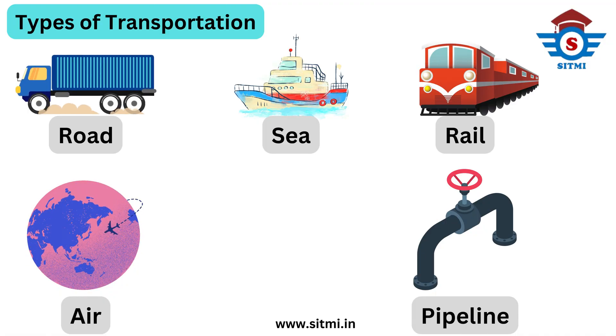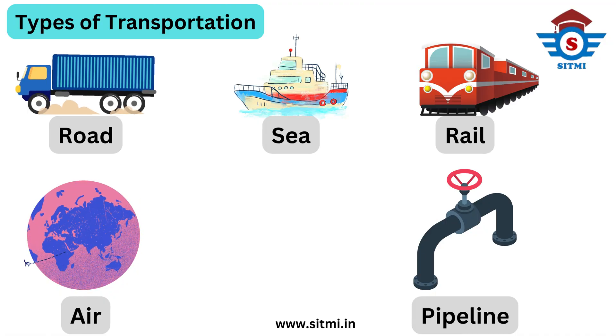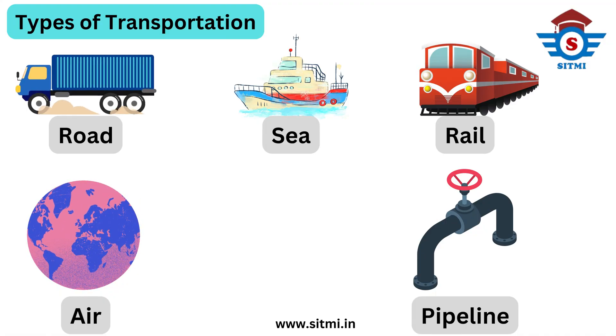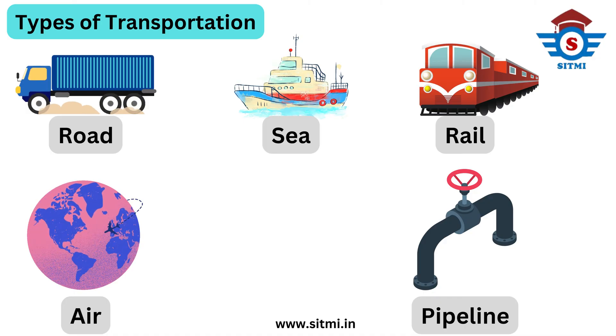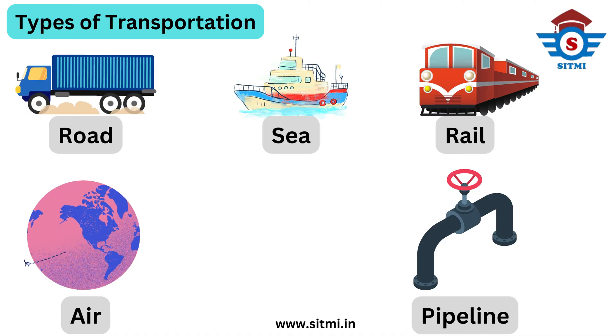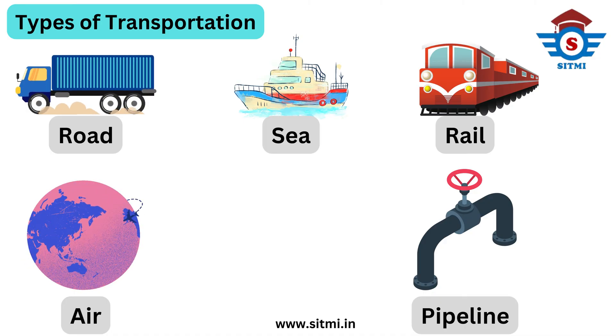There are five key types of transportation, which include road transport, sea transport, rail transport, air transport and pipeline transport. Now let's see each one of them.